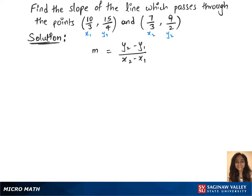Let's plug in the values we have in the formula. m equals y2 is 9 over 2 minus y1 is 15 over 4, over x2 is 7 over 3 minus x1 is 10 over 3.